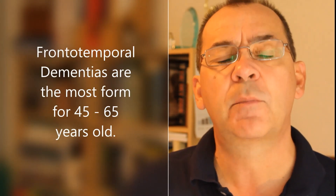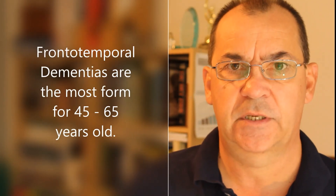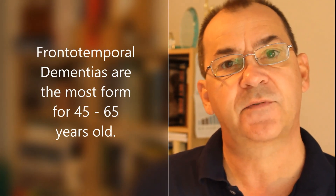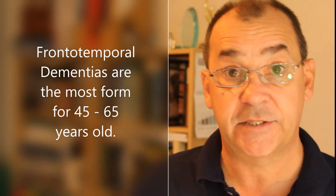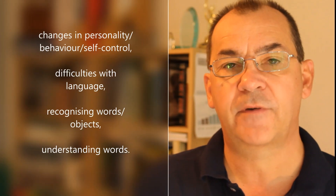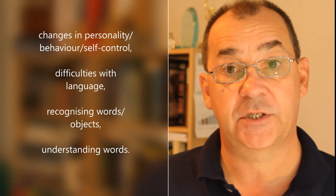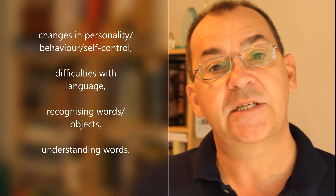These areas of the brain are responsible for controlling behavior, personality, language, and the ability to plan and organize. There are a number of sub-variants of frontotemporal dementias depending on the location and amount of brain damage that has occurred. These dementias are the most common form of dementia in individuals between the ages of 45 and 65.